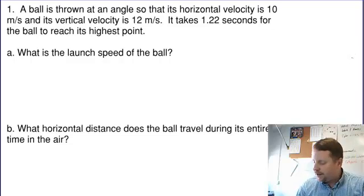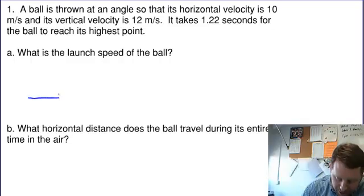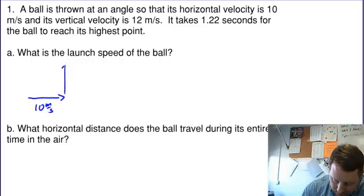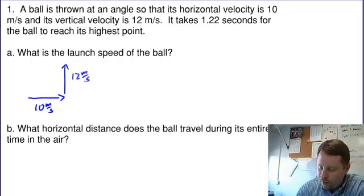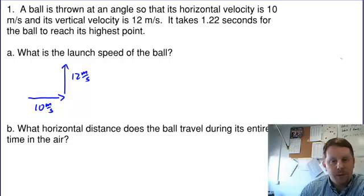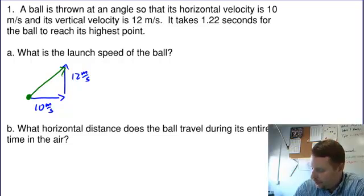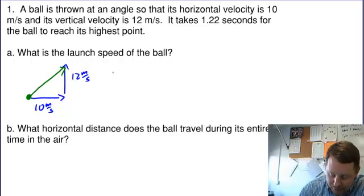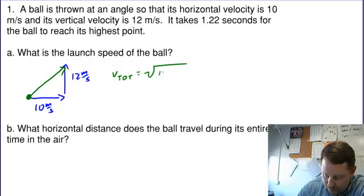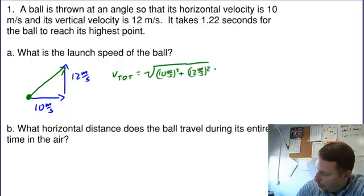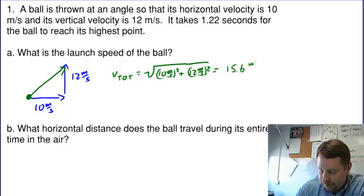To find the launch speed, let's first figure out the components: in the x direction we have 10 meters per second, and in the y direction we have 12 meters per second. The launch speed is the resultant of these two vectors, which we get by going from the starting point of the first vector to the ending point of the last vector when they're lined up tip to tail. To find the magnitude of that resultant, we use the Pythagorean theorem: a squared plus b squared equals hypotenuse squared. So the total velocity v is the square root of 10 meters per second squared plus 12 meters per second squared, or 15.6 meters per second.